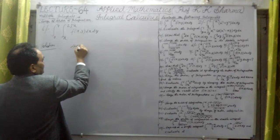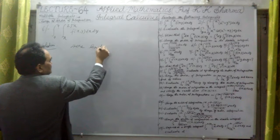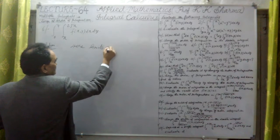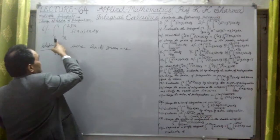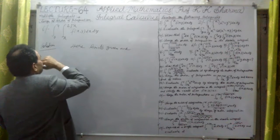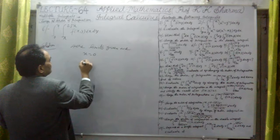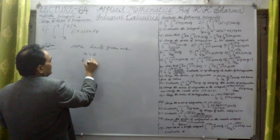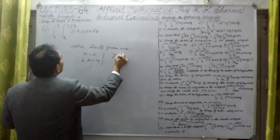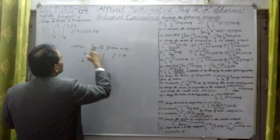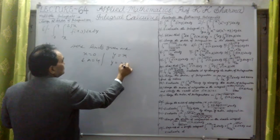So here the limits given to us are R. The limits given are: x equal to 0 and x equal to 4 — these two limits are given. And y equal to x, and the second part y equal to 4.